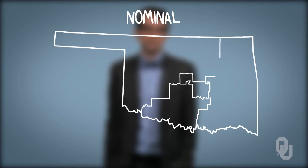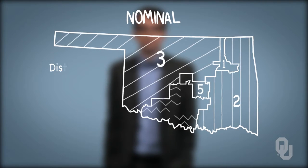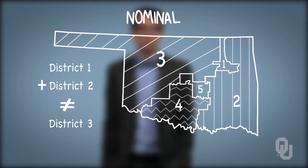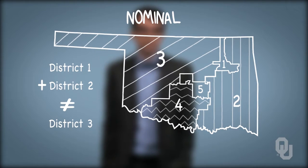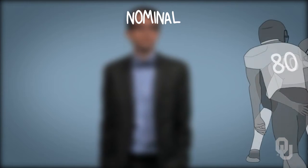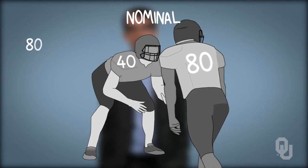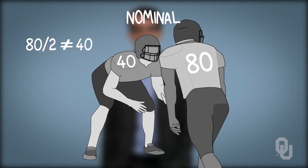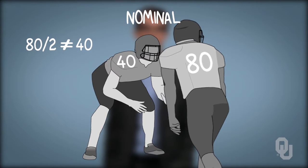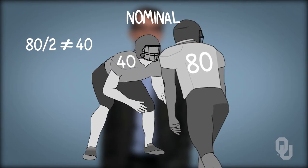Consider the congressional districts in the state of Oklahoma: District 1 plus District 2 doesn't equal District 3, nor is any order implied. District 1 is not necessarily bigger or more populous than District 2. The same is true with football jerseys — 80 divided by 2 doesn't equal 40, nor is a player wearing jersey 80 better than one wearing 40, or vice versa. Even if jersey numbers represent positions on the field, those positions are just categories.